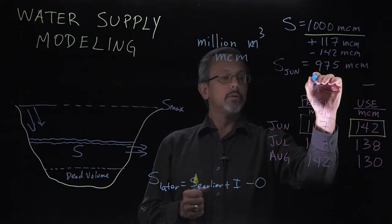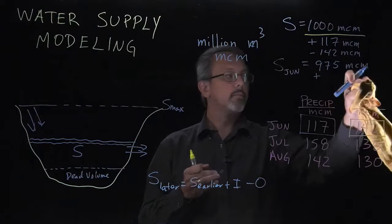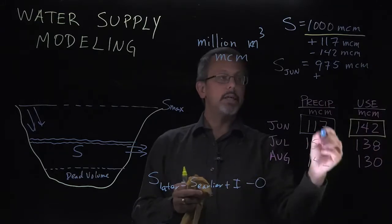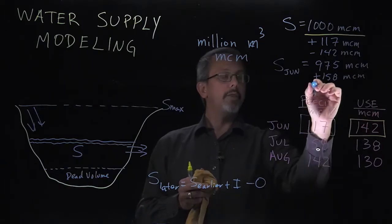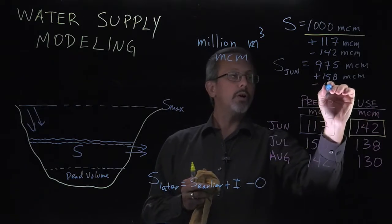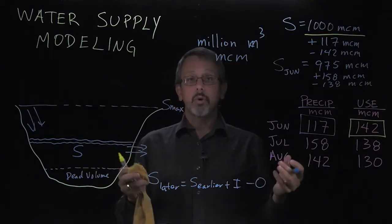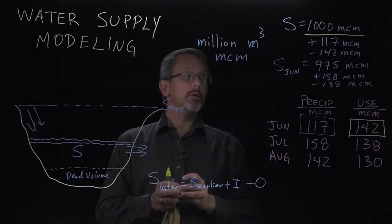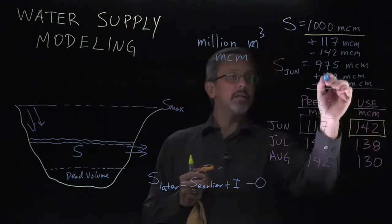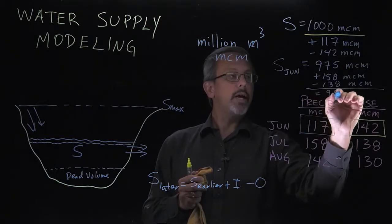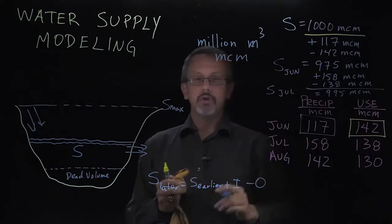In July, we might expect a larger amount of rain. Looking at the value here, I see 158 million cubic meters. And then we use 138 million cubic meters. Perhaps there are fewer people, historically people go on vacation or something along those lines, or we have reasons to believe that we're going to use a little bit less. And in this case, you'll notice the net there is an addition of about 20. And we end up with 995 million cubic meters. That would be our storage for the month of July.